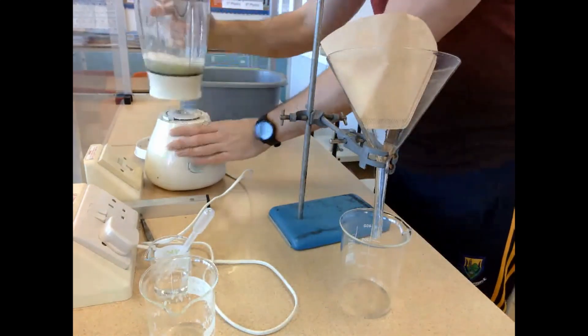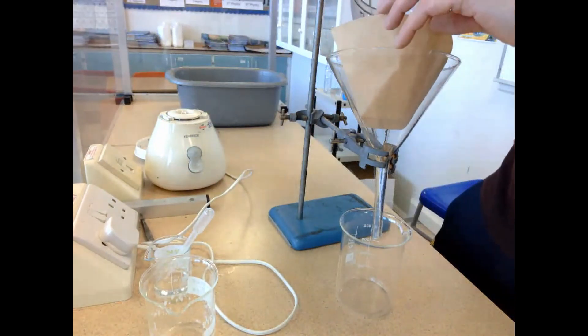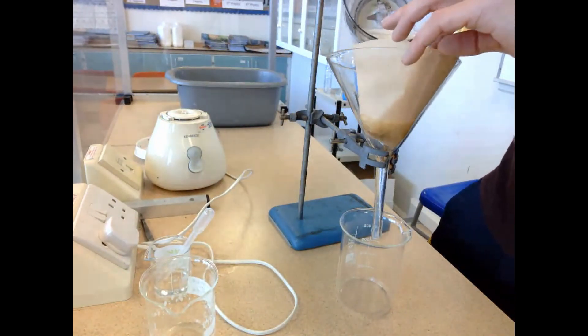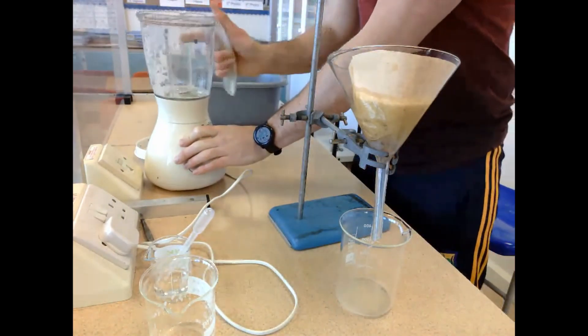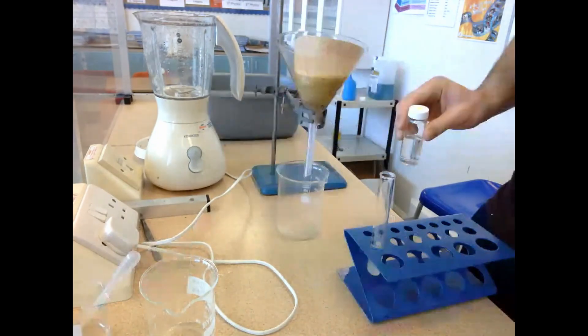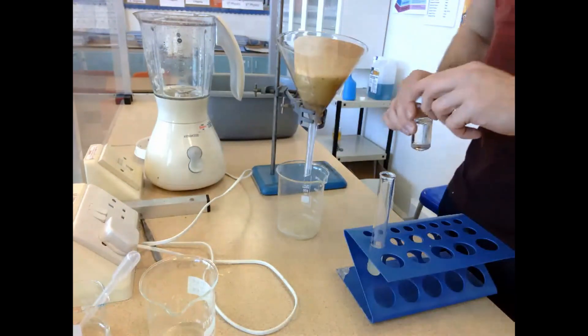So we take the blended solution, we pass it along into the coffee filter here and straight away this begins to filter out the solution. What we're going to do is we're going to capture some of this filtrate and add a few drops of protease to break down proteins associated with DNA. Now we don't actually have to do it as a kiwi because it produces its own protease.